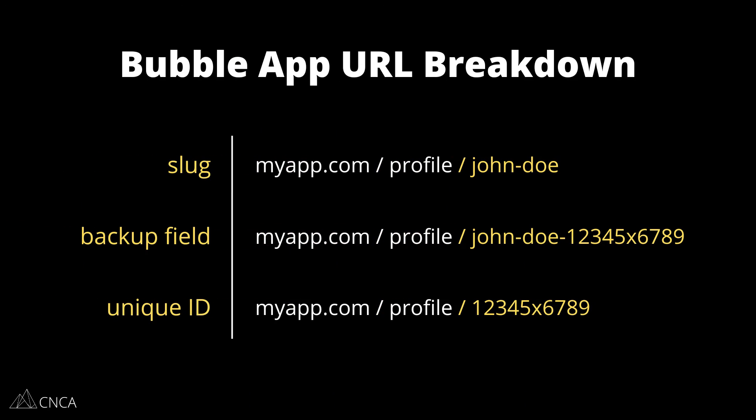In Bubble, you can also create dynamic pages. A really common use case is a profile page, and so in the URL of a dynamic page you're going to have an identifier of some sort to a database record. Bubble actually has three different ways of creating IDs in a dynamic page's URL: you can use a slug, you can set up a backup field (which is a combination of a custom field and your unique ID), or you can fall back to the default unique ID of that record. By setting up an identifier for a dynamic page, you can support your SEO efforts and make things easier to share.